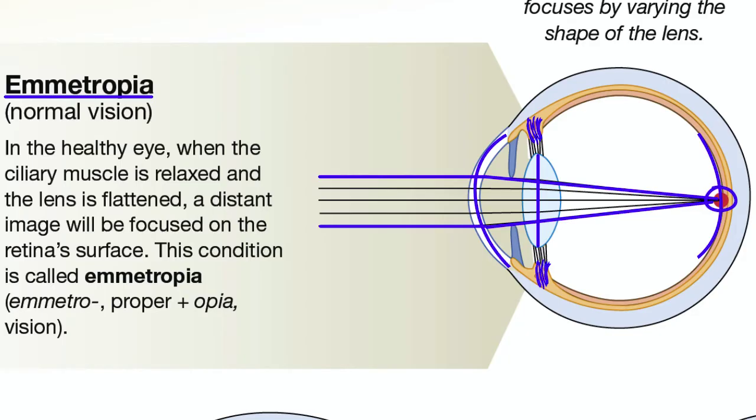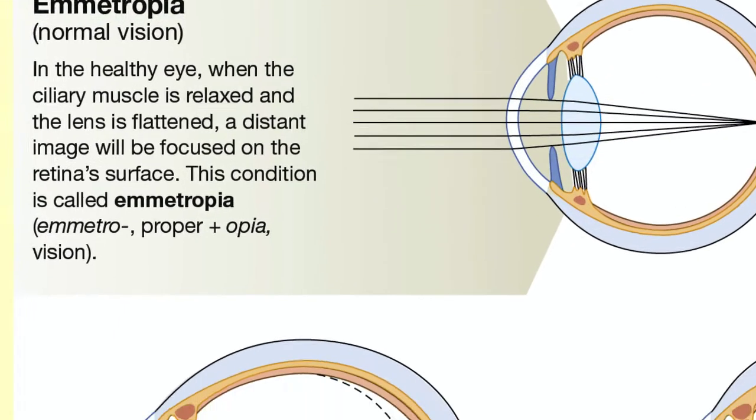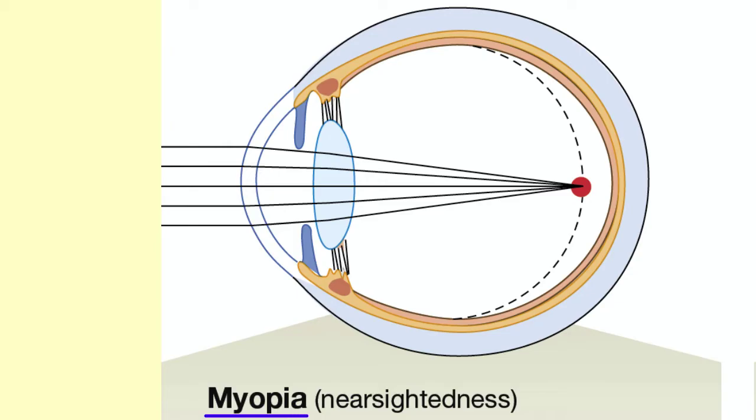But not everybody has normal vision. People with nearsightedness, or myopia, can see nearby objects clearly but distant objects are blurry. The nearsighted eye is too long and shaped a bit like a football.